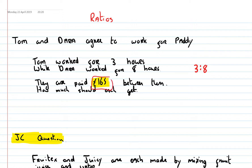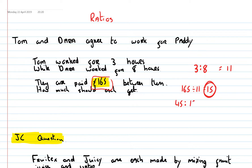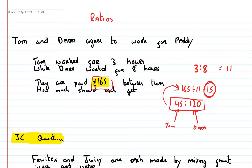How do I divide something into a given ratio? I add the two ratios together and get 11. Then I divide 165 by 11 and get 15. I multiply the 15 by 3 and get 45, and 15 by 8 and get 120. So Tom should get 45 euros and Dara should get 120 euros. To check, if we add these together we should get back to 165.